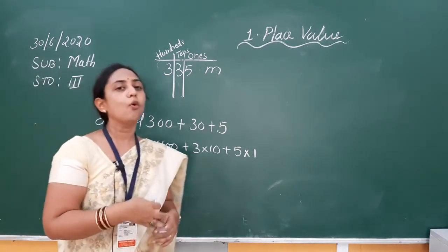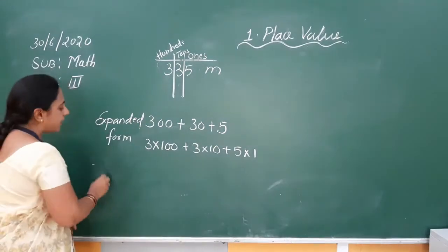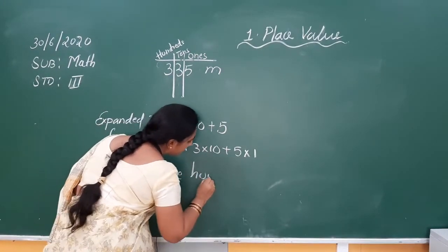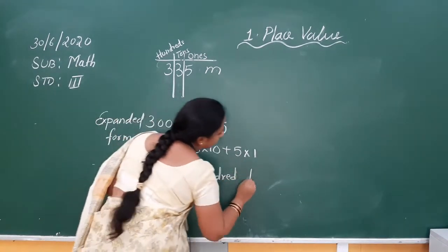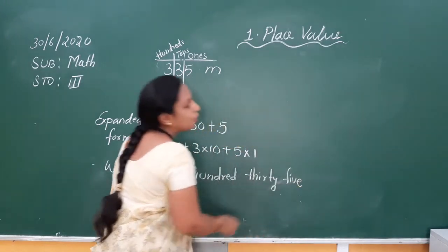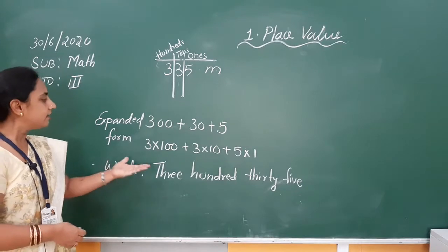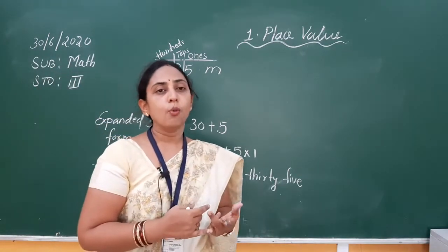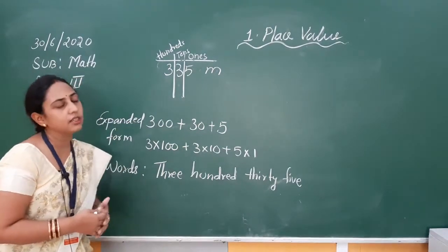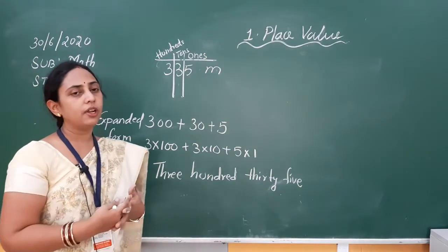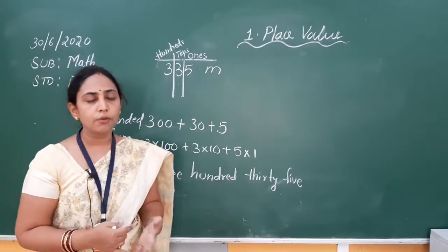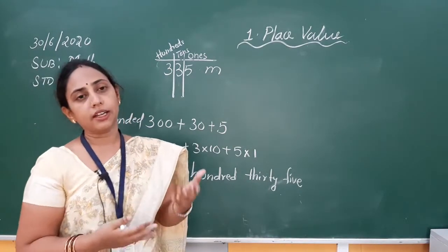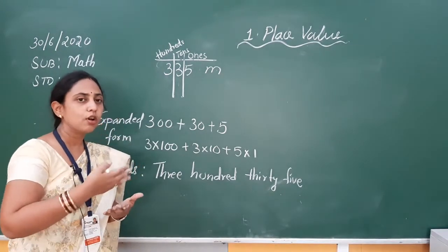So the expanded form is 300 plus 30 plus 5, or we can write 3 into 100 plus 3 into 10 plus 5 into 1. The second form is writing in words: 335 can also be written as three hundred thirty-five. Every number can be expressed in standard form, expanded form, and in word form — also called number names. This is the number name, and this is the expanded form.